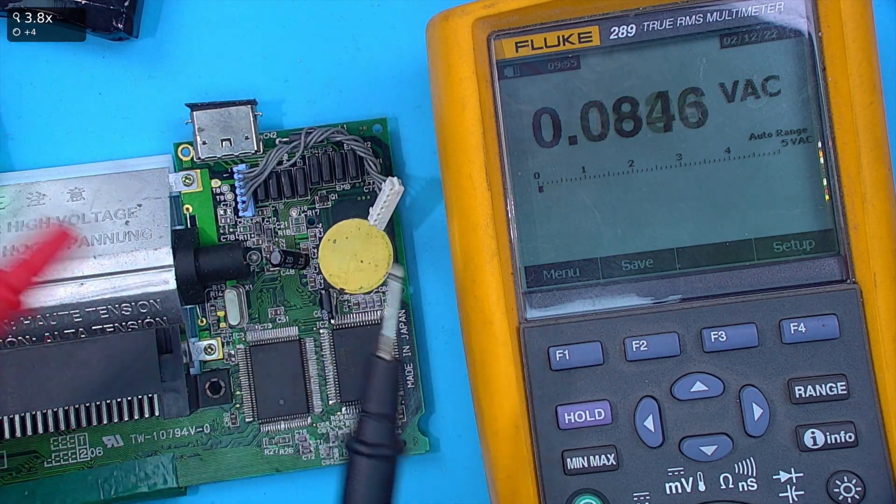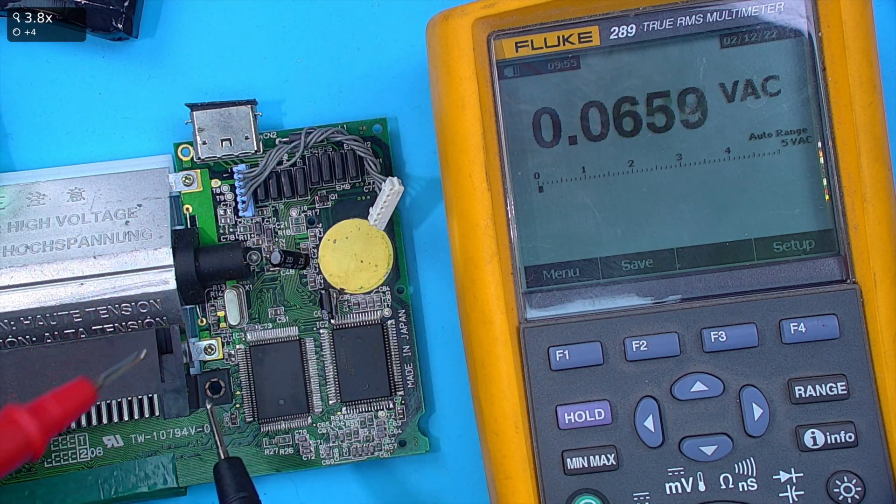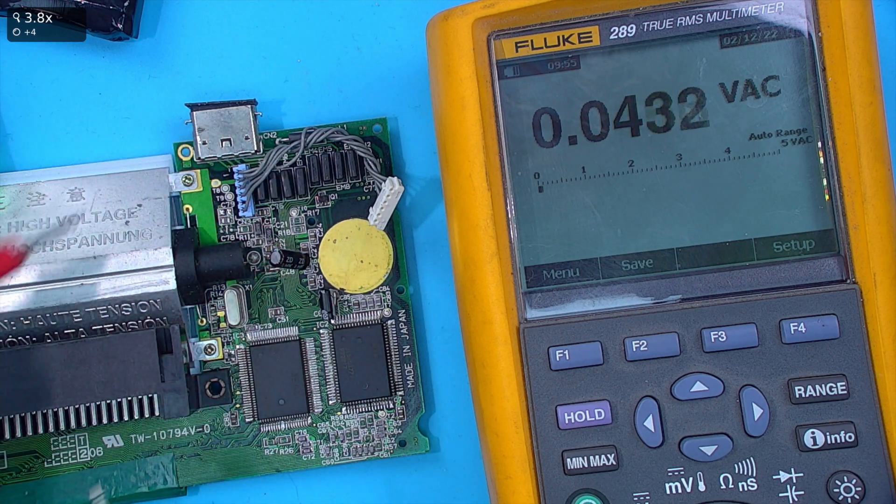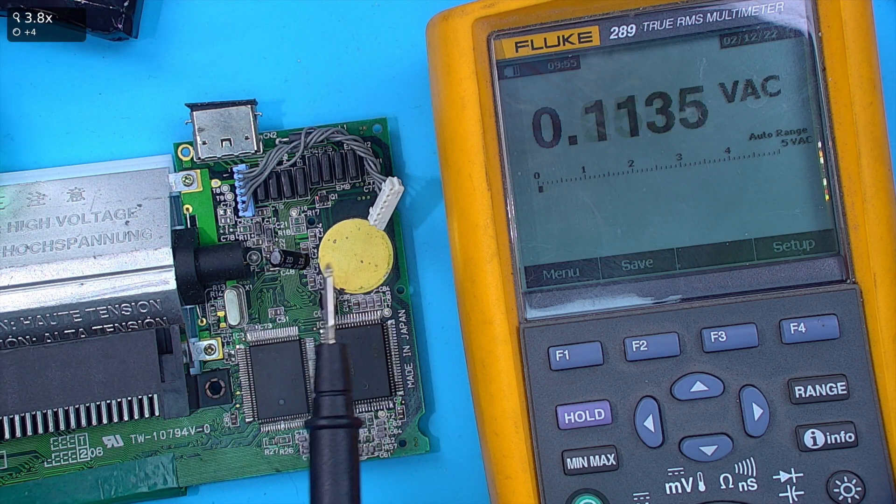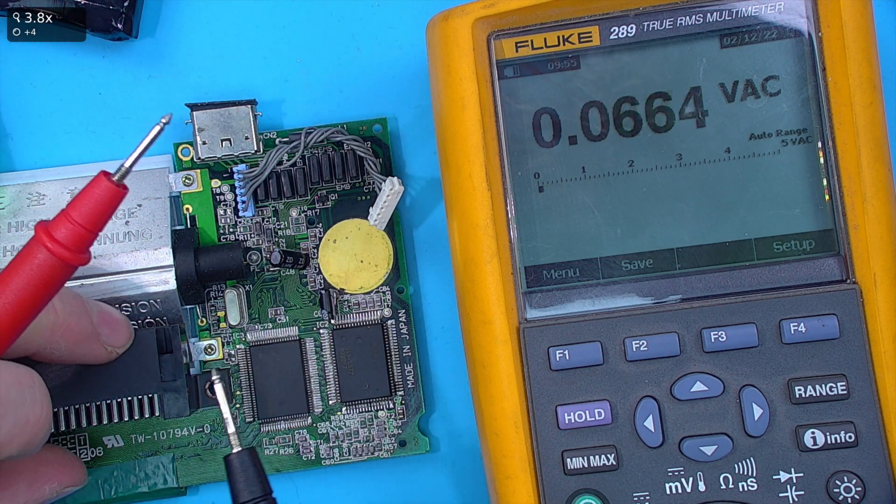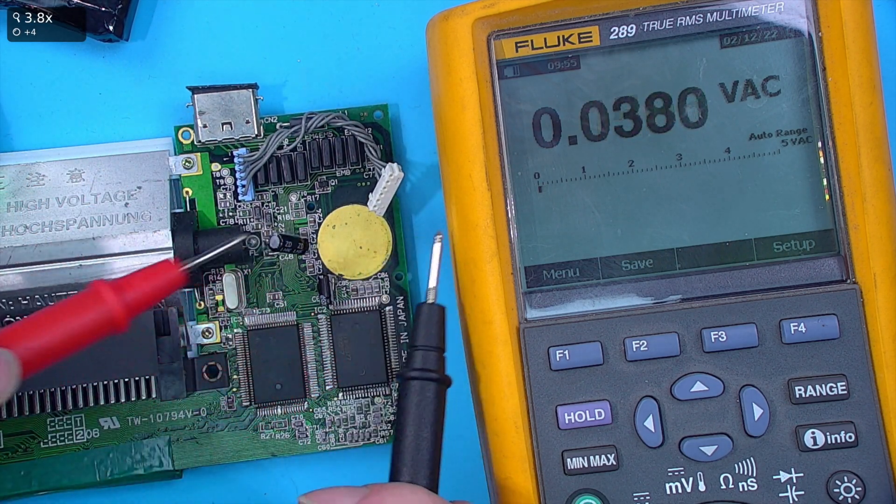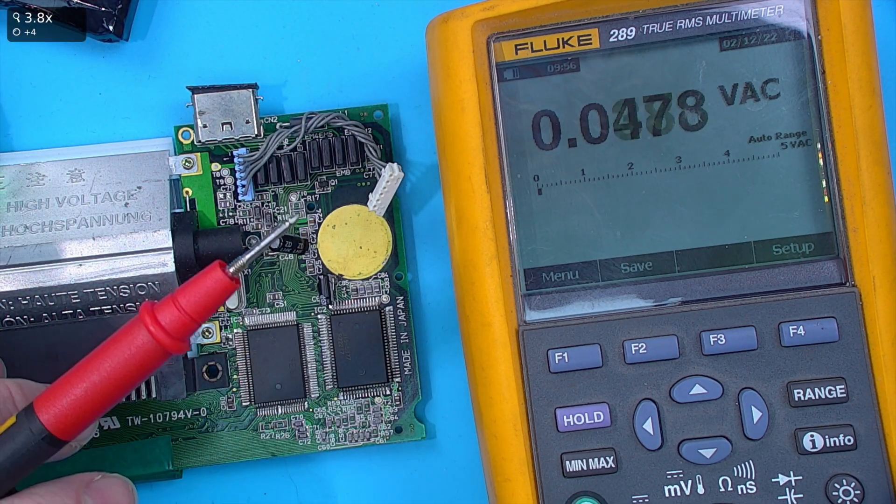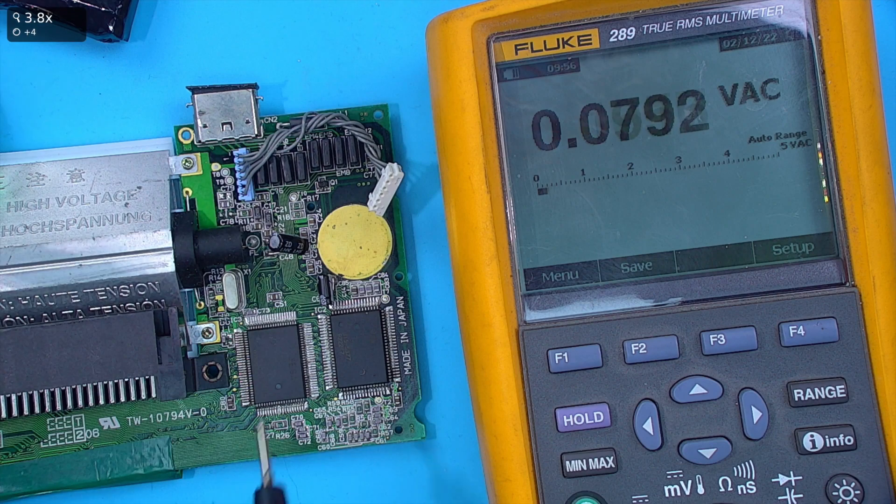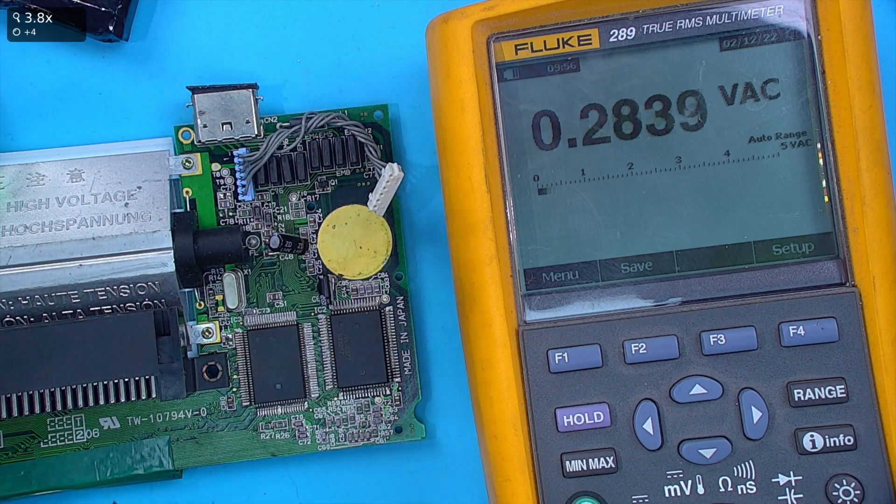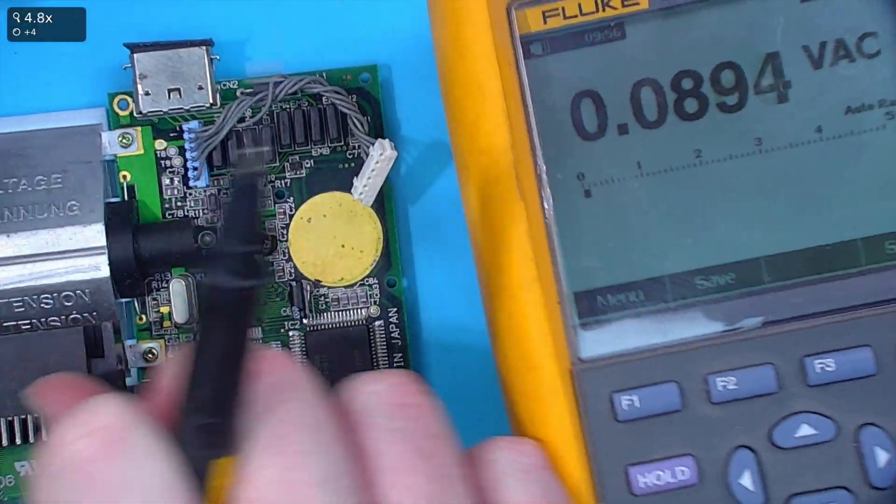One other thing to consider when you probe points is these leads will add a load to the system that you're testing. This will be called the system under test or the device under test. If you ever see DUT as an example, that means device under test, and that's this piece of equipment we're measuring. So when you apply your probes to a system you will be impacting that system. High-end multimeters like this will add a lot less load than cheaper versions and will give you more accurate measurements.